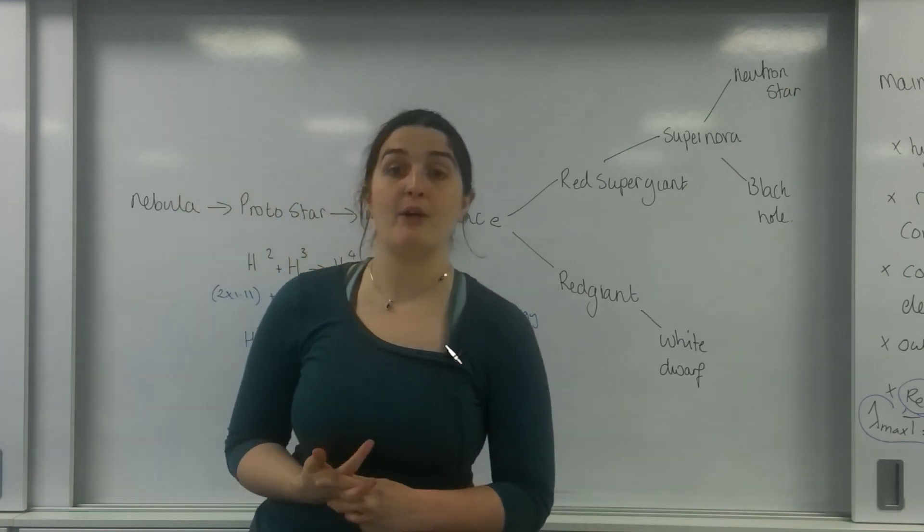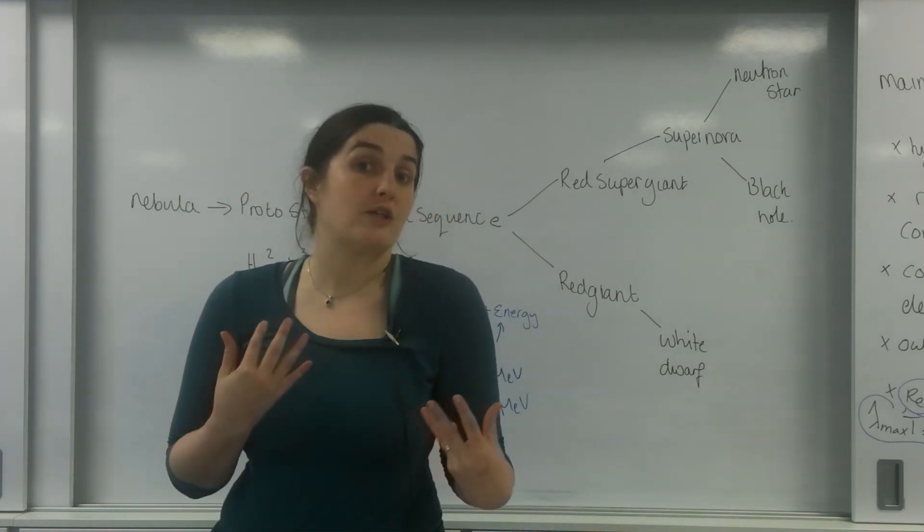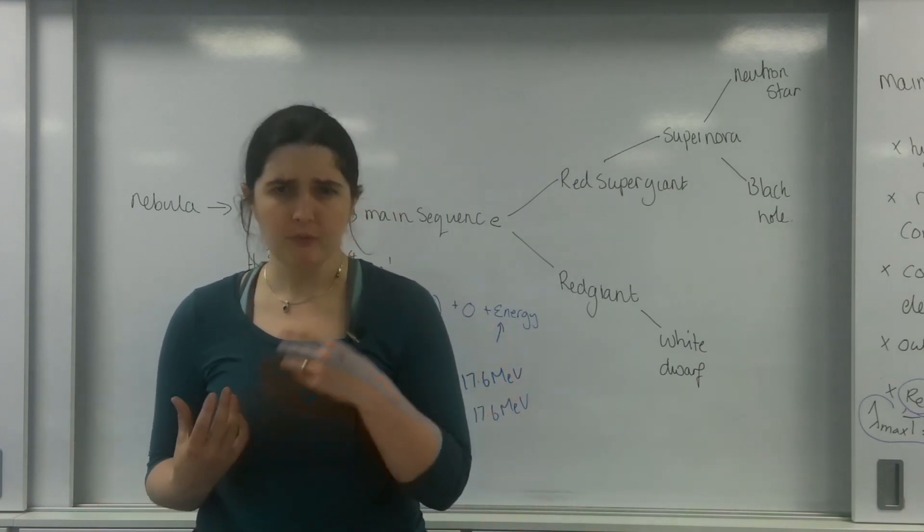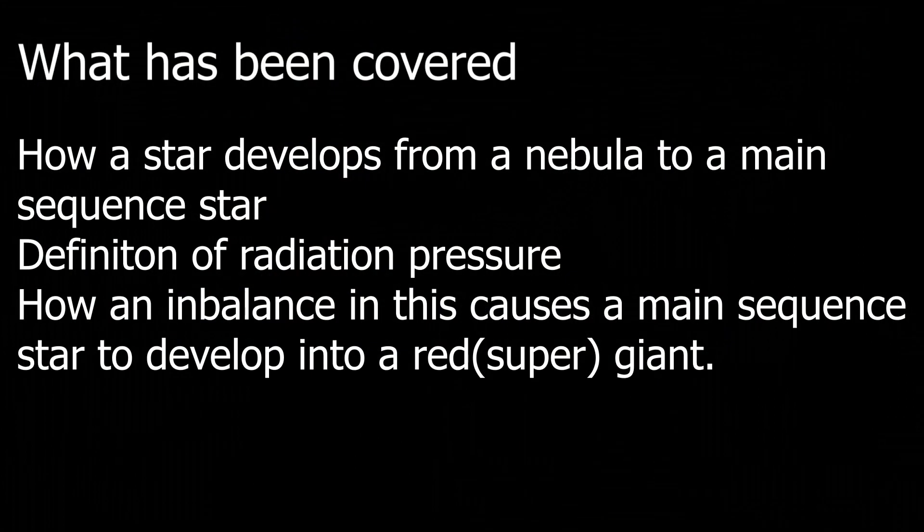That's the journey from nebula to protostar to main sequence star, and how running out of hydrogen causes the core to collapse and corona to expand, creating red supergiants or red giants. In my next video, I'll talk about how we go from a red giant to a white dwarf, and after that, from red supergiants to supernova.